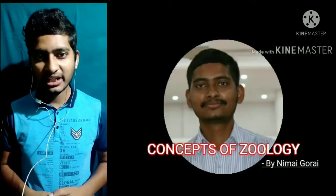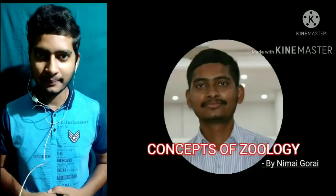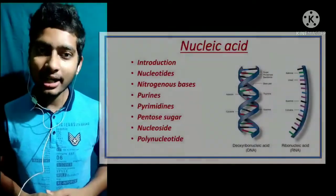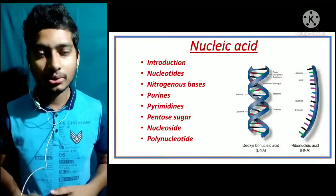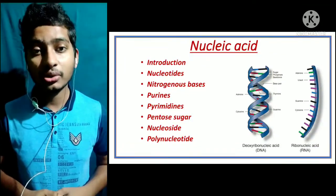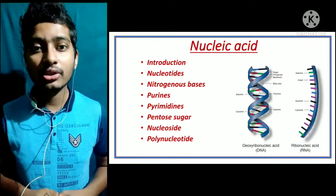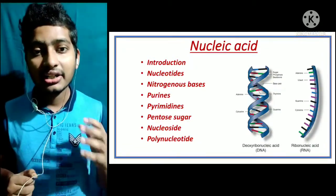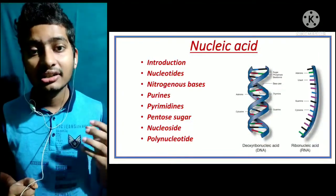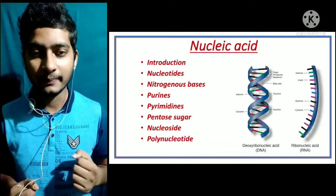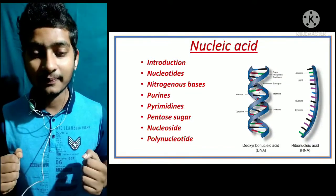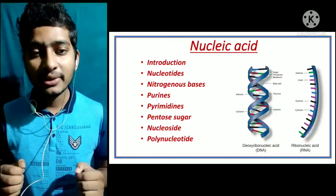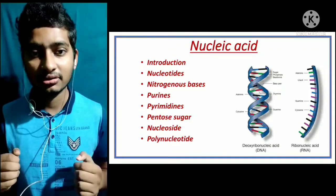Hello guys, welcome back to my YouTube channel Concepts of Zoology. In this video we are going to talk about nucleic acids. You all have heard about DNA and RNA — these are nucleic acids. DNA means deoxyribonucleic acid and RNA means ribonucleic acid. The difference is that DNA contains deoxyribose sugar while RNA contains ribose sugar. Both of these are pentose sugars, meaning they contain five carbons.